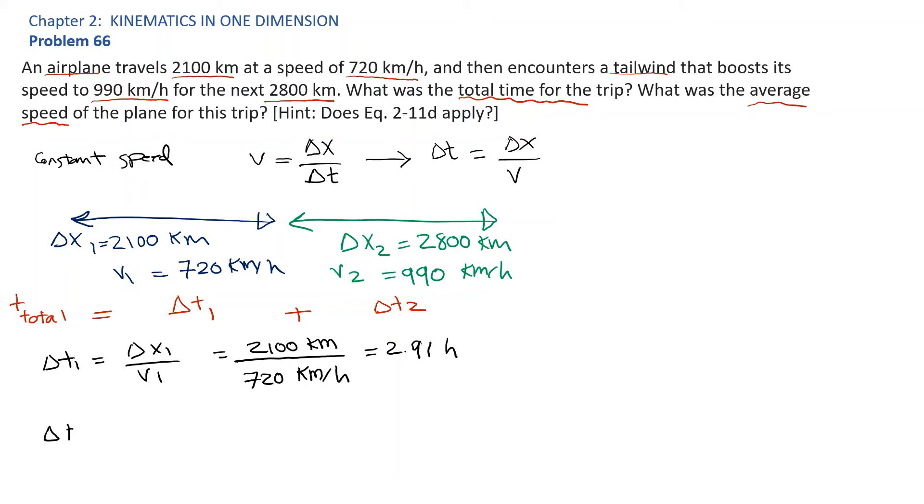Delta t2 is equal to delta x2 divided by V2, or 2800 kilometers divided by 990 kilometers per hour, or 2.83 hours.